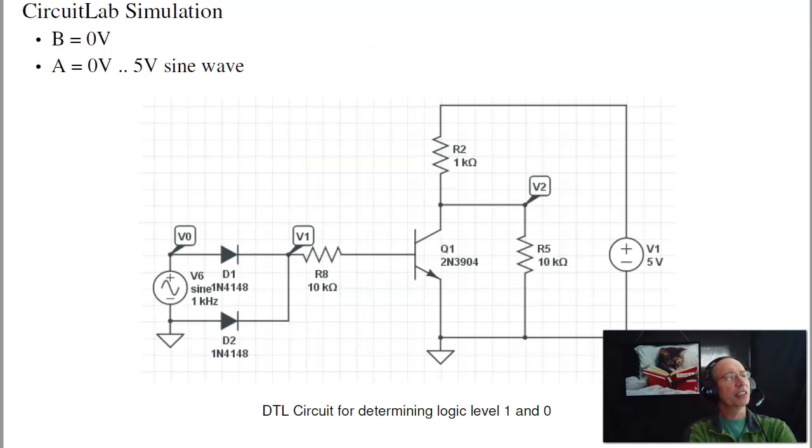You can check that in CircuitLab. Again, the ideal diode says it won't turn on until 1.4 volts for two diodes. That's not exactly true. It depends upon the diode you're using. If I use this diode, 1N4148, kind of the default for CircuitLab, and then have a sine wave. This is a 2.5 volt DC offset, 2.5 volt peak, so it's going to sweep from 0 volts to 5 volts back down to 0.